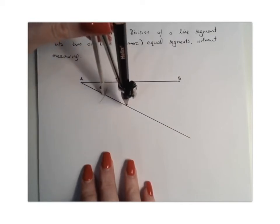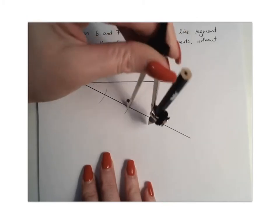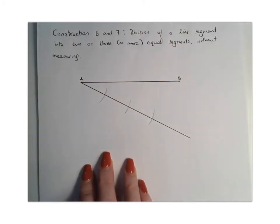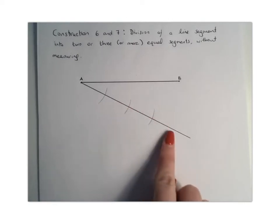You're going to go down to the arc and you're going to draw another one. That's 2. And then 1 more. 3. So again, if you're only dividing it into 2 segments you'd only do 2 of those. If you're dividing it into 4, you'd do another one.